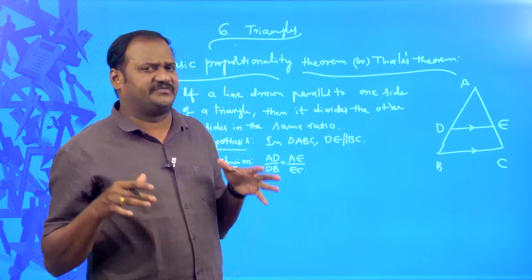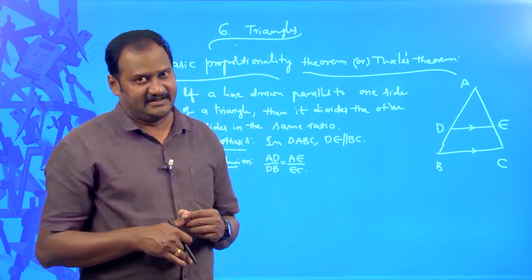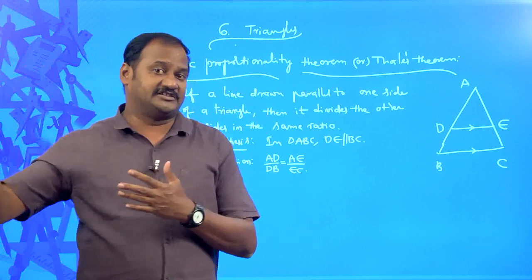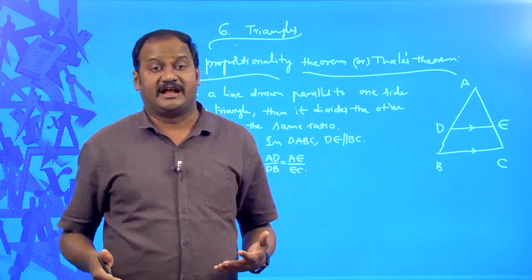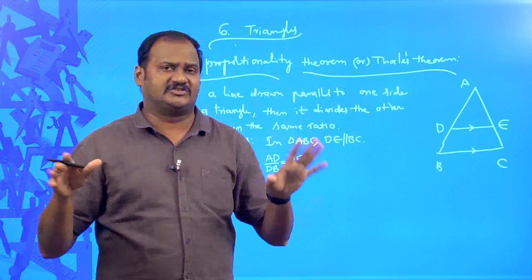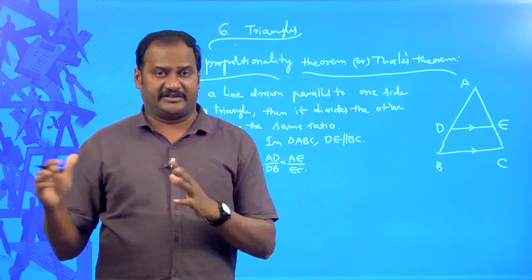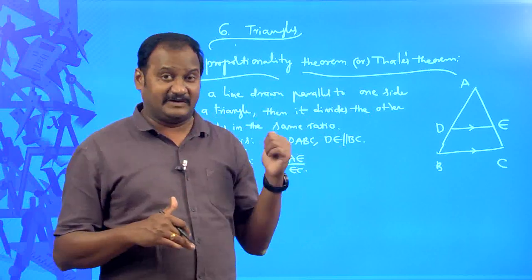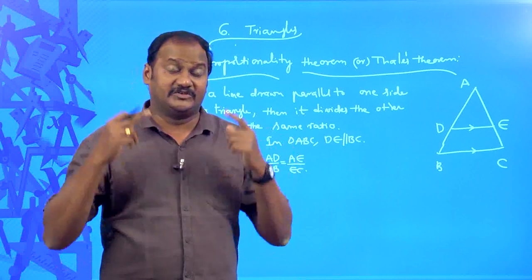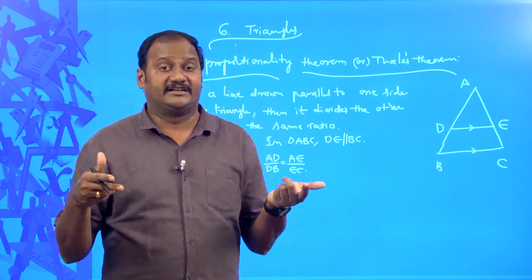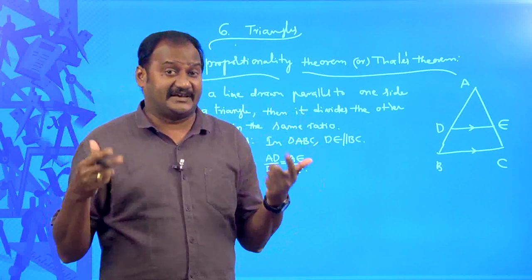The information is very limited, but you need to prove AD/DB equal to AE/EC. This is a very interesting thing in plane geometry — it is not something like algebra or arithmetic where you have a lot of information. In plane geometry, the information is very limited and you will have to think a lot, which improves your thinking skills.